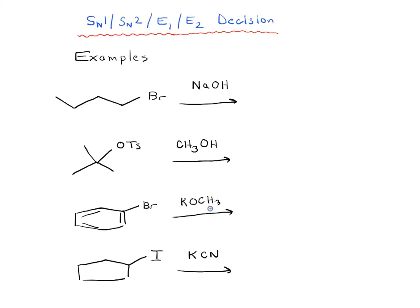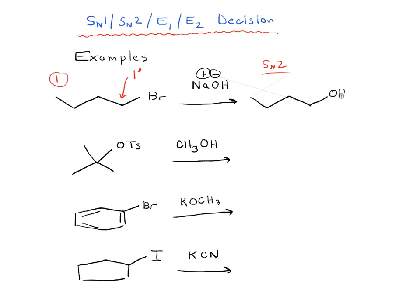In example one, we have NaOH with an alkyl halide. What type of alkyl halide? It's primary — and we said primary is almost certainly SN2. So it goes through SN2: we break the carbon-bromine bond and form a carbon-oxygen bond, giving us that product.